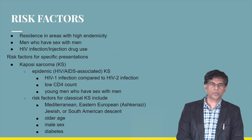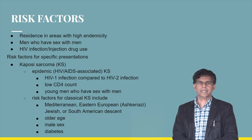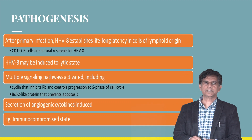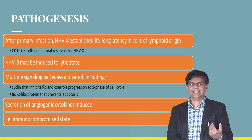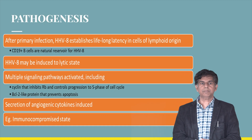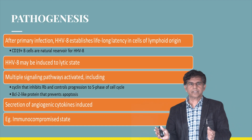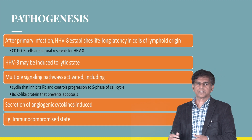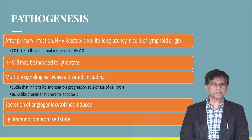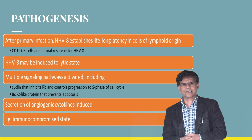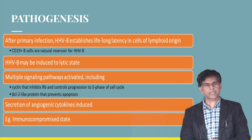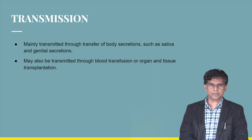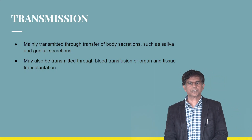Pathogenesis is very important. After the primary infection, HHV-8 establishes long-term latency in cells of lymphoid origin. CD19-positive B cells are the natural reservoirs — remember CD19-positive B cells. HHV-8 may then be induced into the lytic state. Multiple signaling pathways are activated, including cyclins that inhibit RB and control progression through the S phase of the cell cycle, and BCL-2-like proteins that prevent apoptosis. Secretion of angiogenic cytokines is induced, mainly in the immunocompromised state.